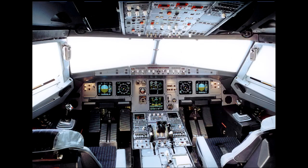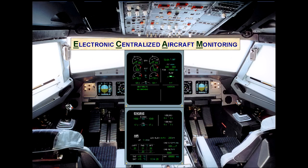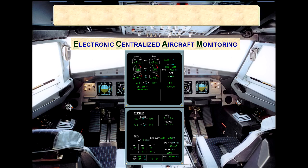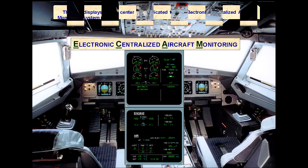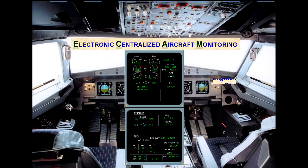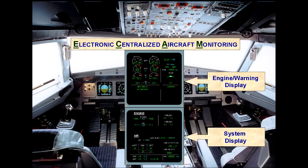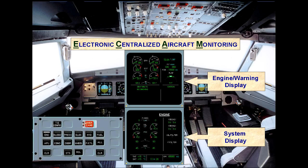The two displays in the center are dedicated to the Electronic Centralized Aircraft Monitoring System, ECAM. The upper ECAM display is known as the Engine Warning Display, EWD. The lower ECAM display is known as the System Display, SD. It is on this screen that various aircraft system parameters can be viewed by the pilots. As an example, we will cycle through the system pages for you.